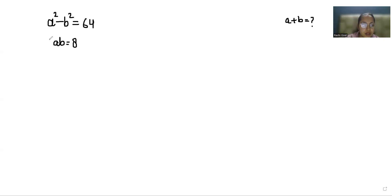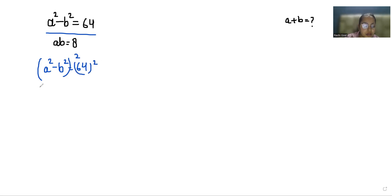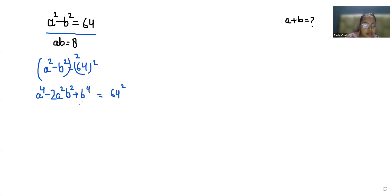So first I'm taking this equation: a squared minus b squared equals 64, and I am squaring both sides. So it becomes the identity of (a squared minus b squared) whole square, which gives a power 4 minus 2ab squared plus b power 4, equals 64 squared.